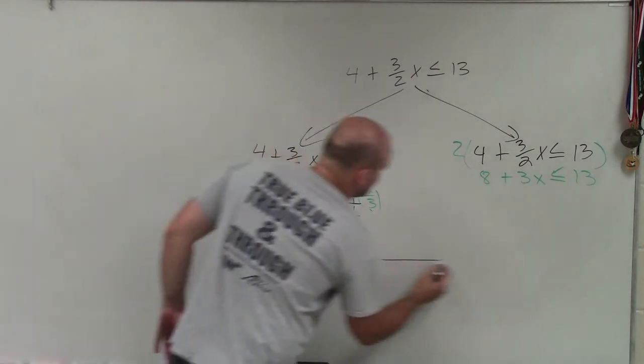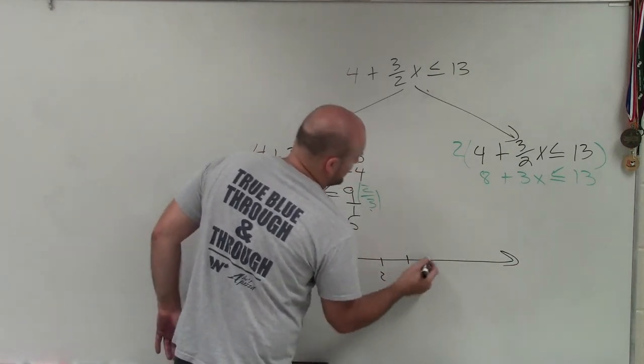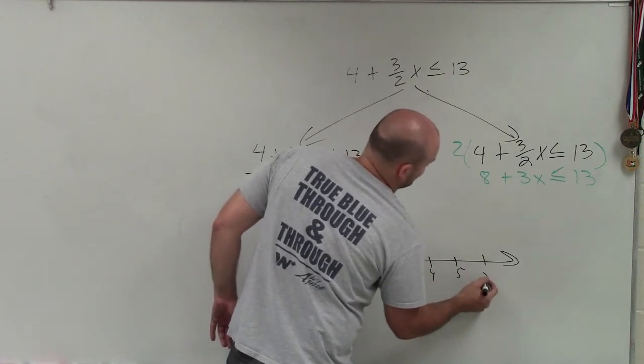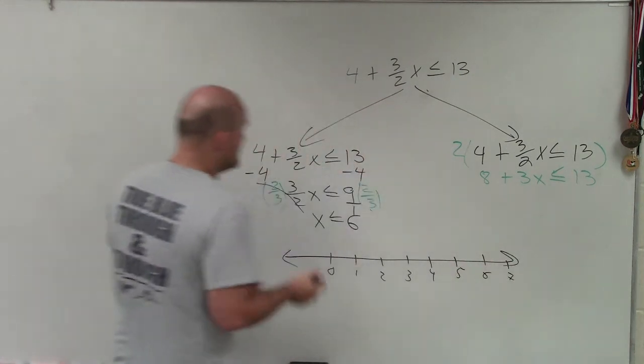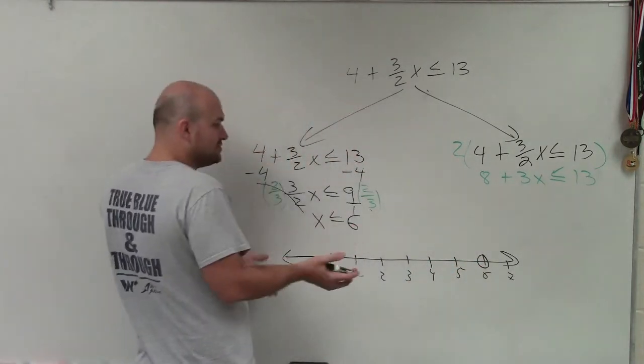So I have a number line: 0, 1, 2, 3, 4, 5, 6, 7. Now we go to 6, and we make a nice big dot.